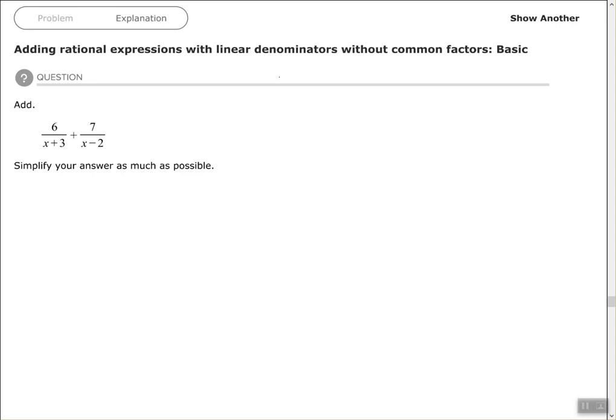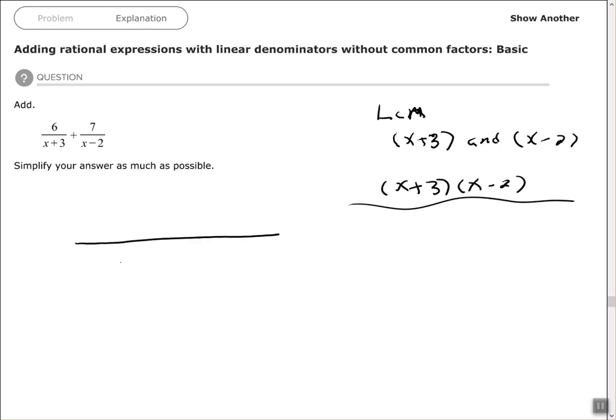Let's start over here. The least common multiple of x plus 3 and x minus 2. Both factors must be represented, so that's simply x plus 3 times x minus 2 is the least common multiple. Just like we did before, let's make one fraction with the common denominator of x plus 3 times x minus 2.